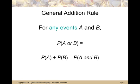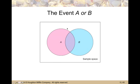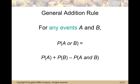The general addition rule is: for any events A and B, the probability of A or B occurring is the probability of A plus the probability of B minus the probability of A and B. You might wonder why we're subtracting. When we add the probability of A — the whole pink circle — plus the probability of B — the whole blue circle — we've added the overlapping purple part twice, once with A and once with B. So we subtract it once because it's been overcounted. That's why we subtract the joint probability, P(A and B).